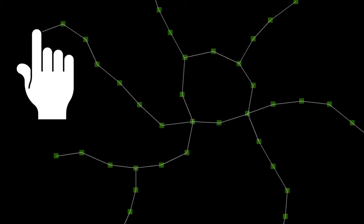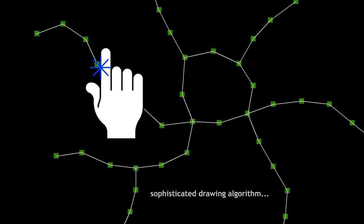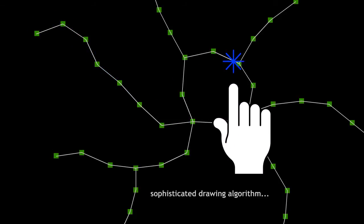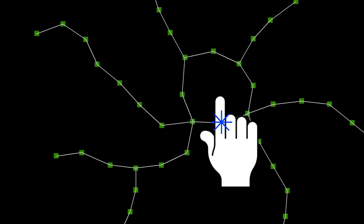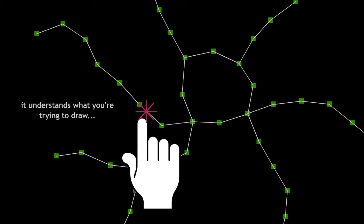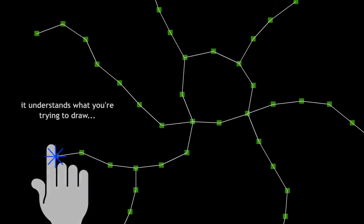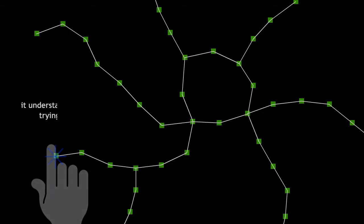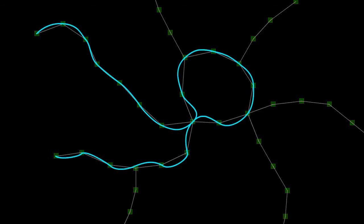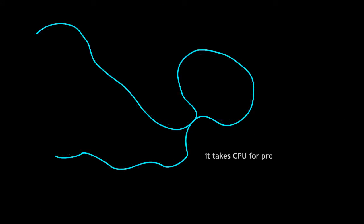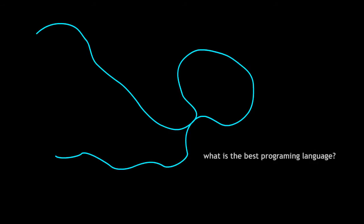In Traffic Wonders, the drawing algorithm is a bit complicated. While the player is drawing, apart from generating the lines, it needs to detect what the closer points are, and then snap so the player can see what they're drawing. This isn't something difficult in terms of programming, but regardless of what programming language you're using, it takes some good CPU time for processing. So the question is: what programming language to use?